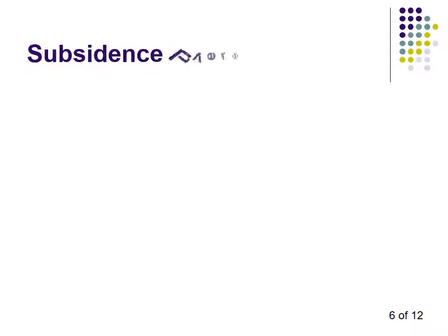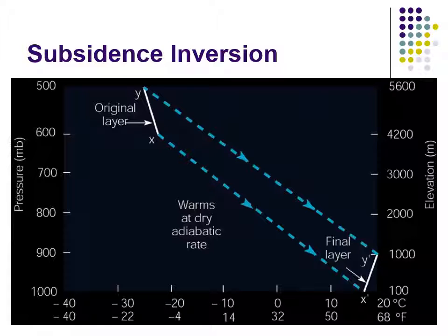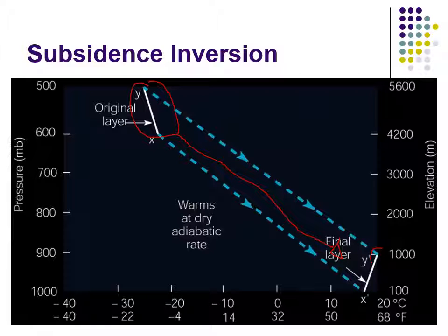Here's an example: we have an upper layer of air, and we bring it down. As you can see, the top layer is now warmer than the bottom layer. We have cold air on the bottom and warm air on top, giving us a stable atmosphere.